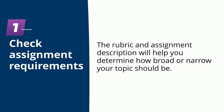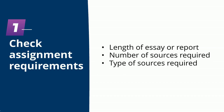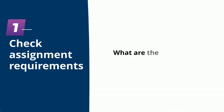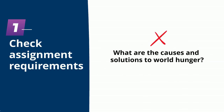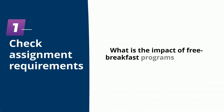First, check the assignment requirements. The rubric and assignment description will help you determine how broad or narrow your topic should be by answering questions like: how long does your essay or report need to be? How many sources are required? What kind of sources should you look for? As much as you might like to, you can't solve world hunger in a thousand words with five sources, but you can look at the impact of free breakfast programs in urban schools.